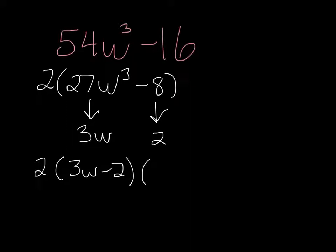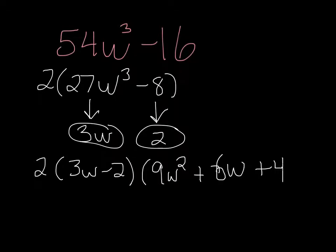And then 3w squared would be 9w squared plus 6w because you multiply these two together for the middle term. The two things that I've circled here, you multiply that together. 2 times 3w is 6w, and then square the second part, which is 2 squared, is 4.